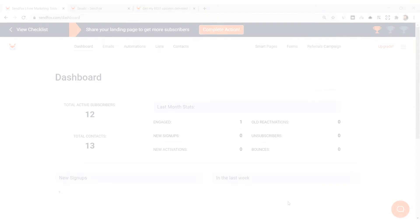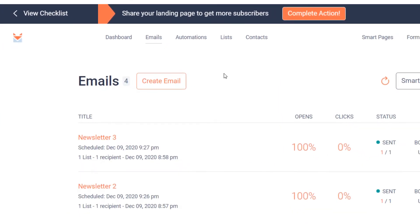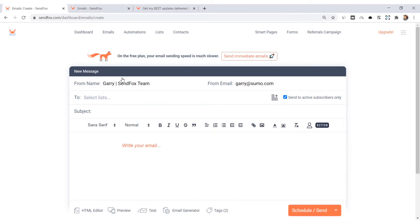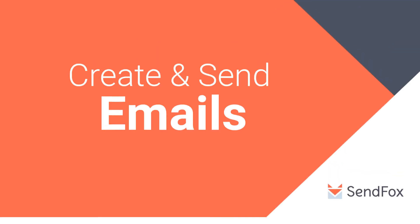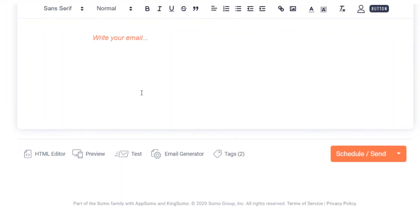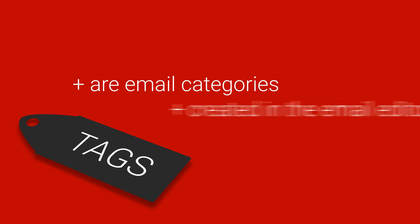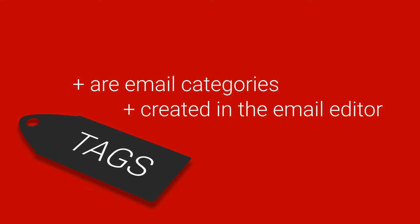Before we continue with your smart page, let me show you how you can select which newsletters or emails you want to showcase on your smart page. Login to your Sandfox account and go to Emails. If you have not created a newsletter as of yet, create one now — we have a video link in the description box below to help you with this. At the bottom of your email editor, you should see Tags. Tags are like categories of your email newsletters. I'll explain later why tags are important here.